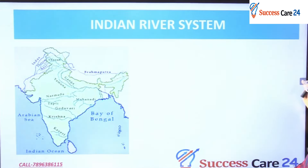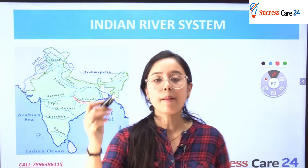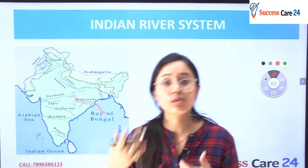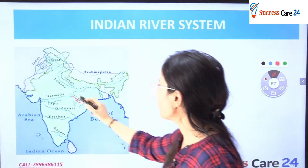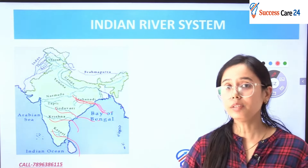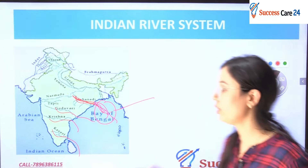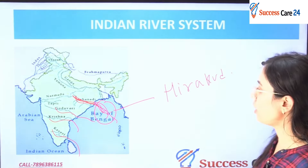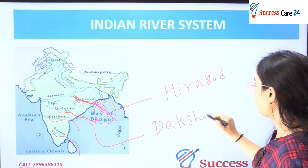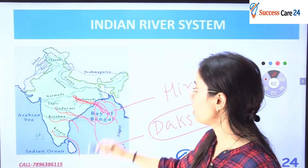Now let's see the important Peninsular rivers, which are also equally important. From north to south, the major ones are: Mahanadi, Godavari, Krishna, and Kaveri. Knowing their map positions helps answer chronology-based questions. On the Mahanadi river, the most popular Hirakud Dam is located in Odisha. Godavari is the longest Peninsular river and is also called Dakshin Ganga — meaning the Ganga of the South — as it is the largest Peninsular river.